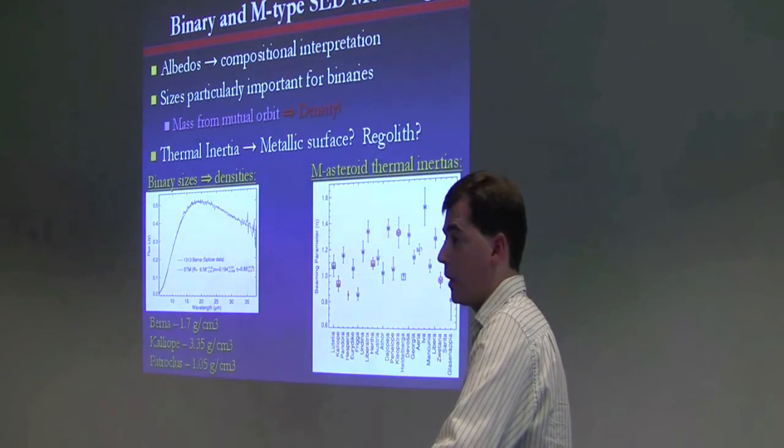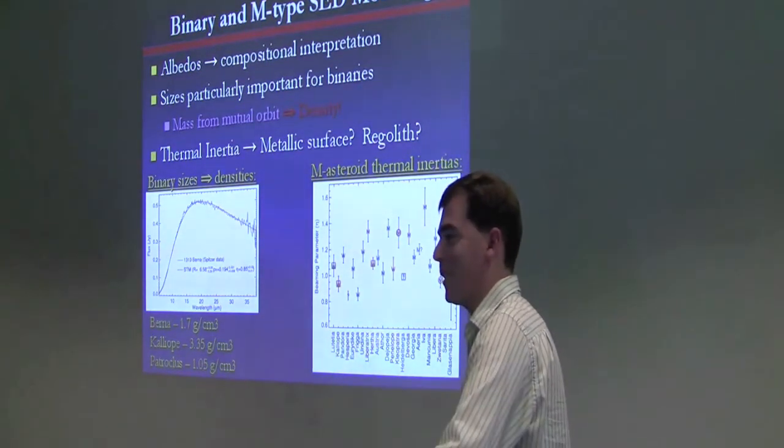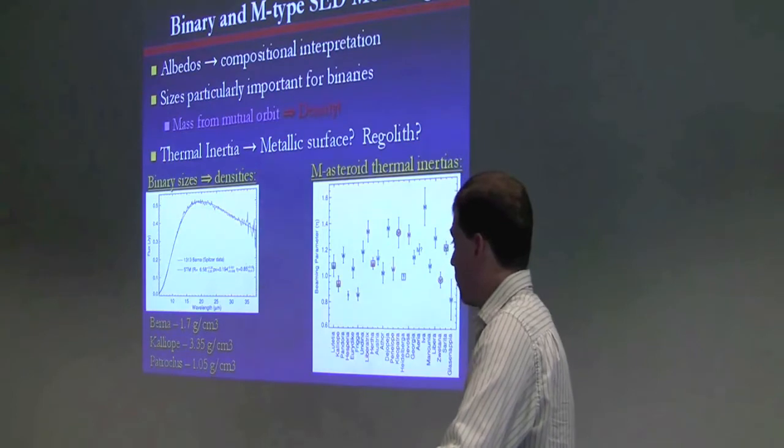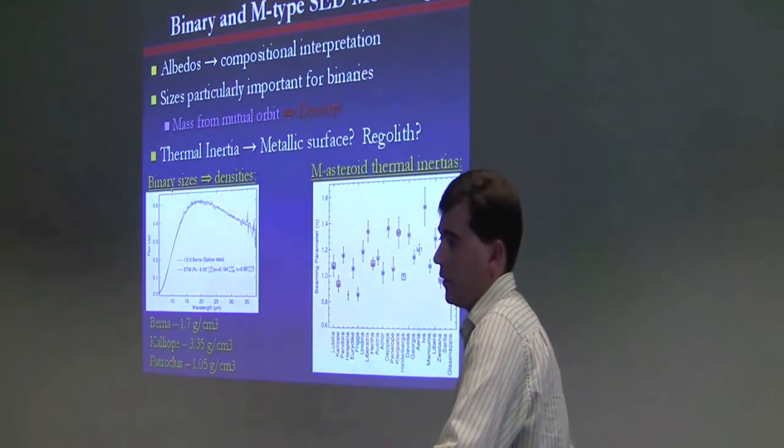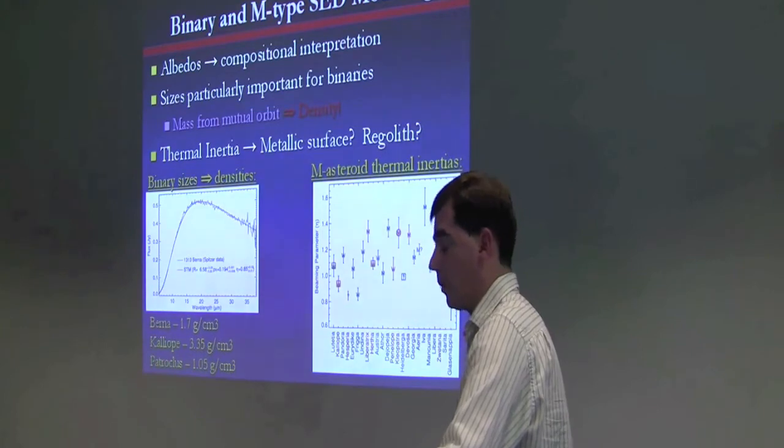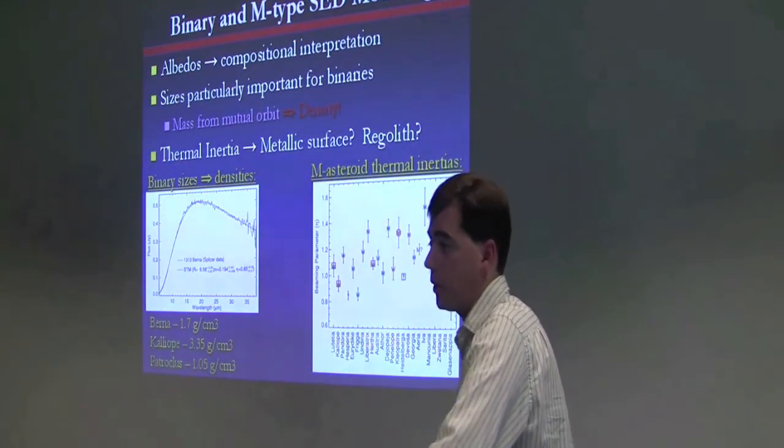So continuing to observe more objects, more small objects in the main belt would be a good test of that hypothesis. Eclipsing binaries.